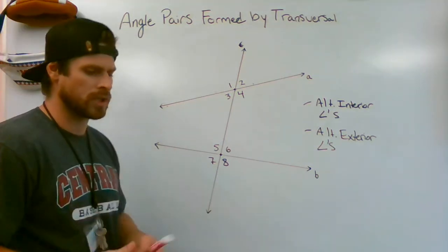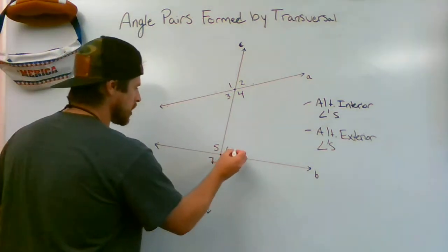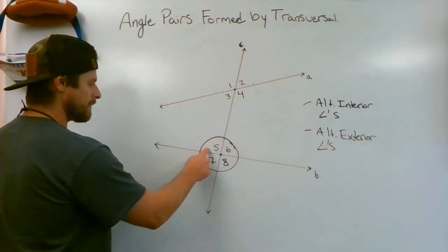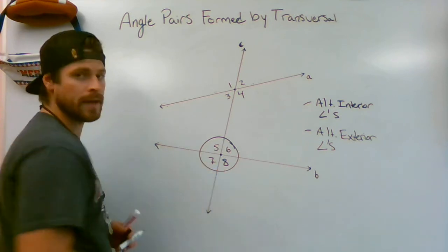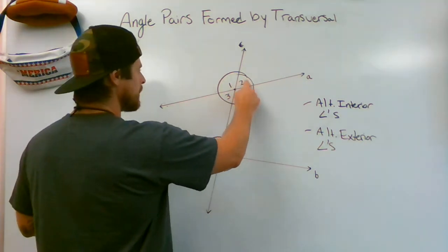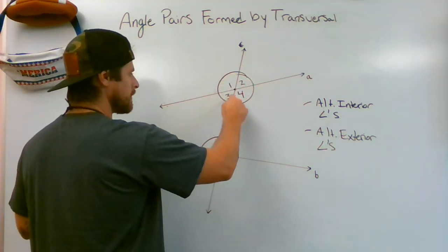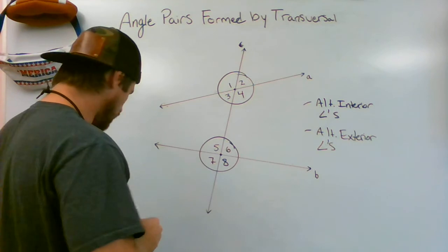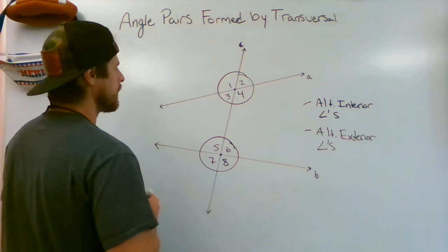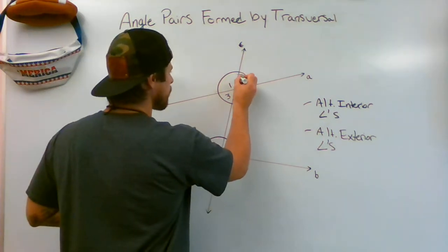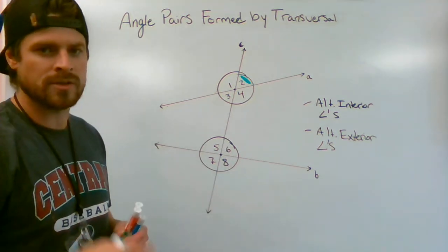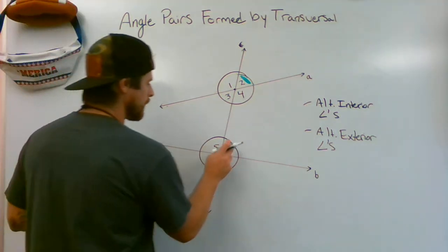Corresponding angles can be tricky. If you draw a circle at one intersection, you've got a top right, top left, bottom left, and bottom right. Same thing at the other intersection. If I color the top right corner green, its corresponding angle is also in the top right corner — that's angle six.